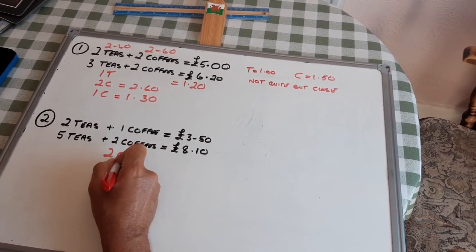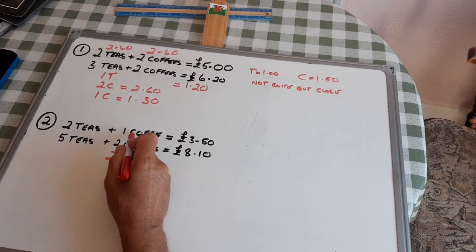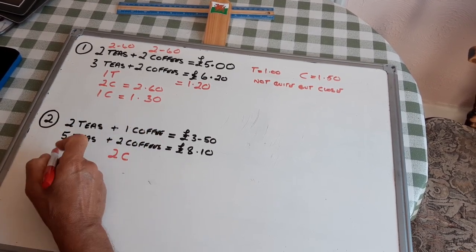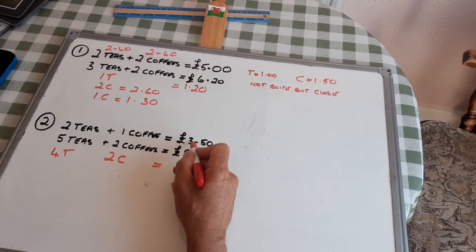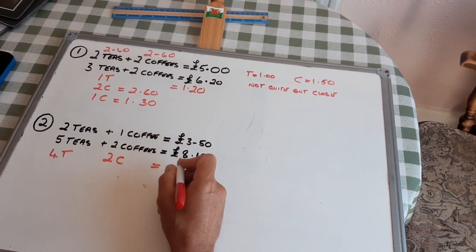So, if I double my first order, two coffees, four teas, and two £3.50s are £7.